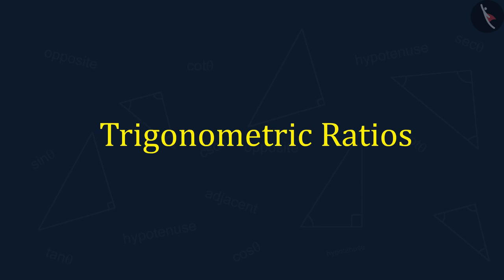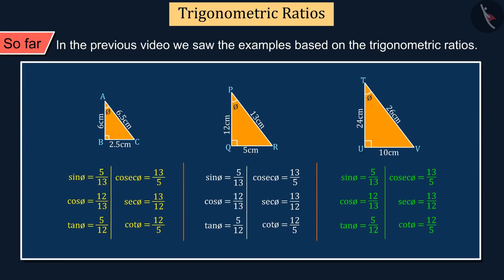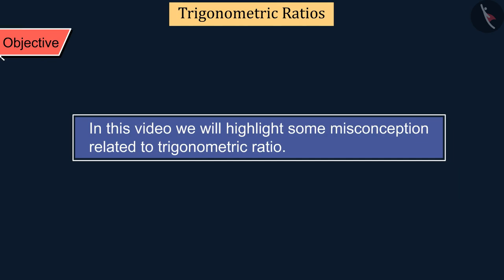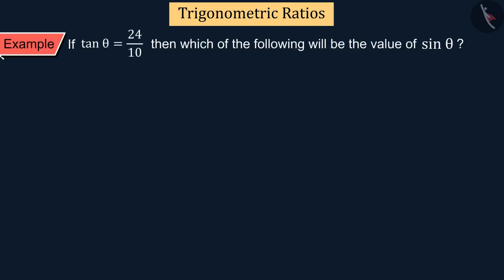Welcome to this video. In the previous video we saw examples based on trigonometric ratios. In this video we will highlight some misconceptions related to these. If tan θ is equal to 24 by 10, then which of the following will be the value of sin θ?